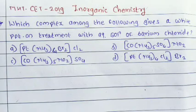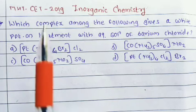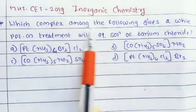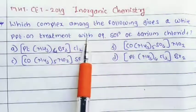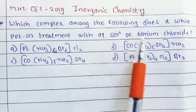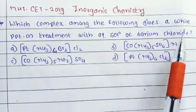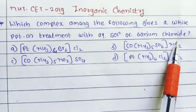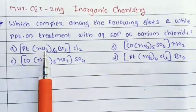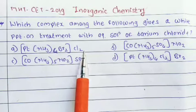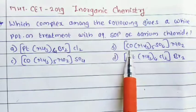Hello students, today we are going to solve some inorganic questions. First question: which complex among the following gives a white precipitate on treatment with aqueous solution of barium chloride? Option A: [Pt(NH₃)₄Br₂]Cl₂.